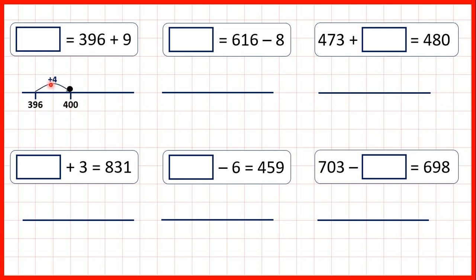Now, because we've added 4 but need to add 9, we need to add 5 more, because 4 and 5 make 9. So 400 plus 5 is 405, so that's our answer.